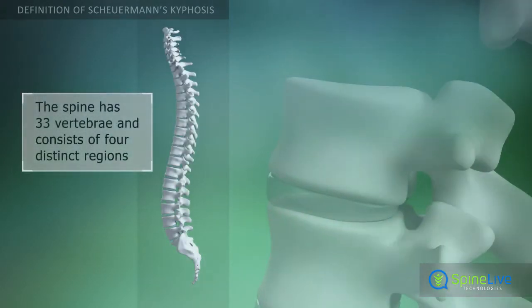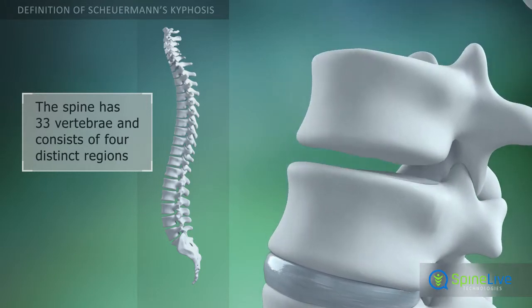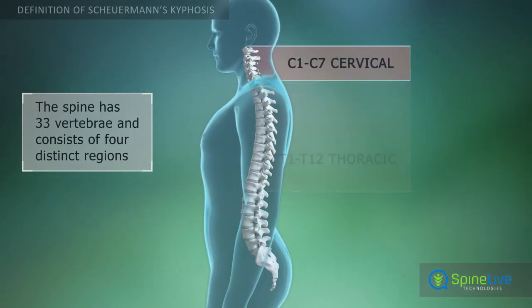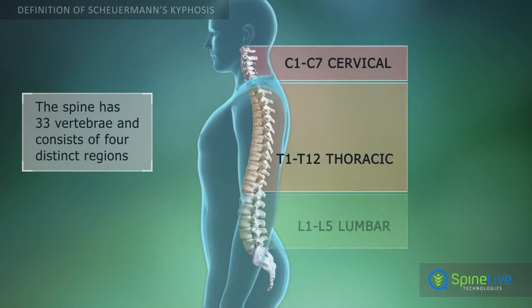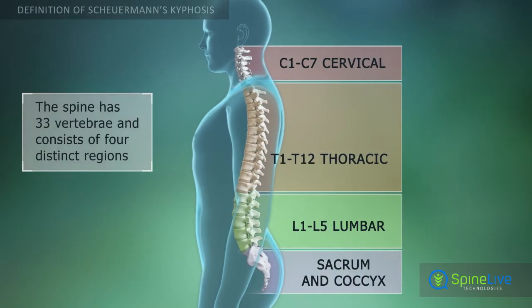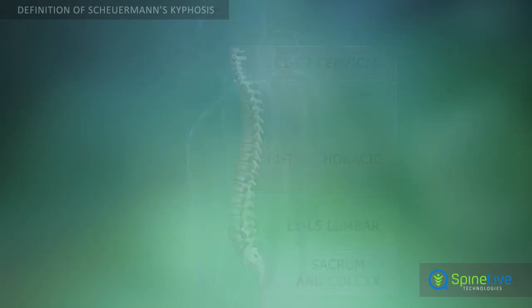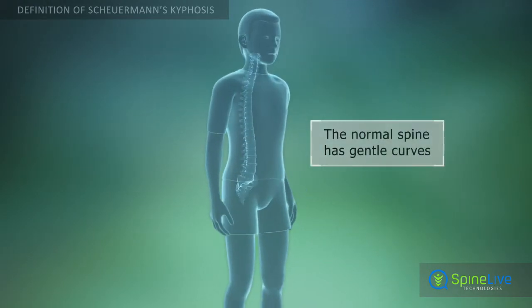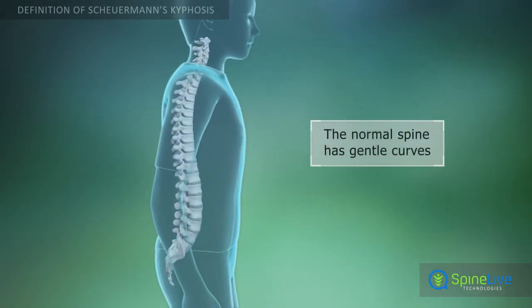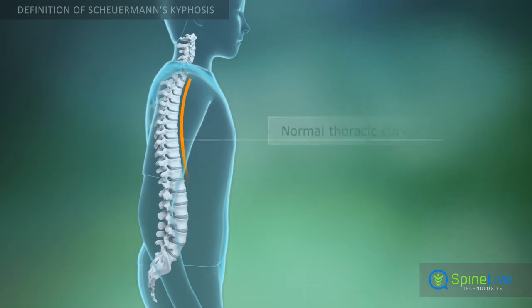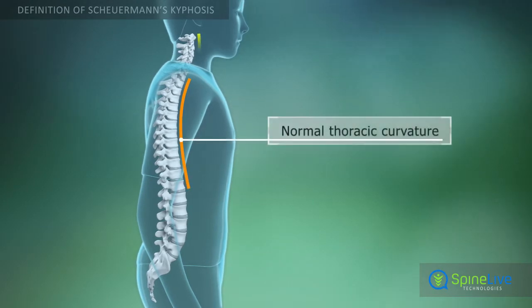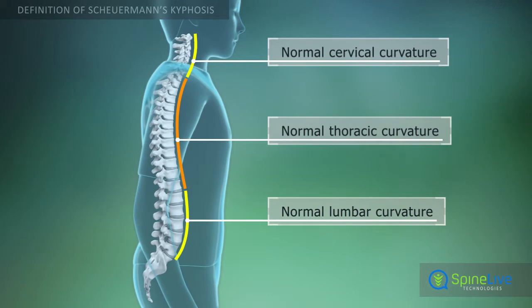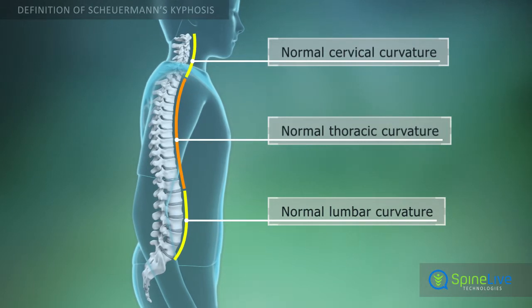The spine is composed of 33 separate bones in four distinct regions. The bones of the spine are called vertebrae, and they are each numbered. The normal spine is not perfectly straight when viewed from the side. The thoracic region has a normal forward curvature ranging from 20 to 50 degrees. The lumbar and cervical curves are reversed.